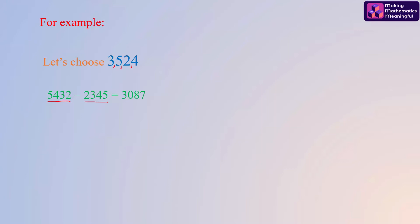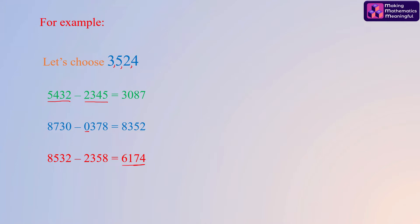We have 3087. Repeat this procedure now with the newly formed number 3087. Remember to use zero at the left-hand side of the smallest four-digit number so formed. Repeat the same procedure with the newly formed number, which is 8352, and we observe that we arrive at the number 6174 in just three steps.